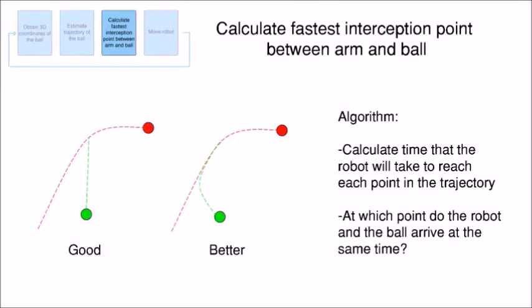After that, we created an algorithm that calculates the time that the robot will take to reach each point in the trajectory, and then determine at what point do they arrive at the same time.